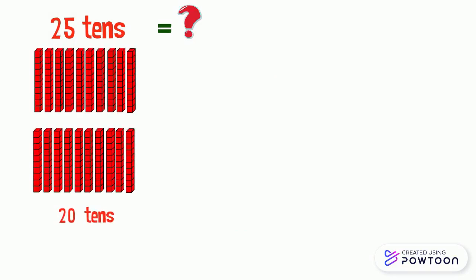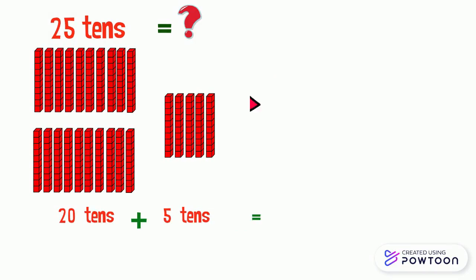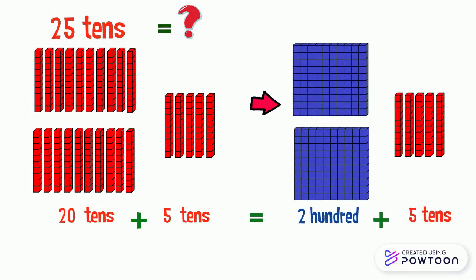Another example: 25 tens is 20 tens plus 5 tens, which is equal to 200 tens plus 5 tens, which makes 200 plus 50, so it is equal to 250.